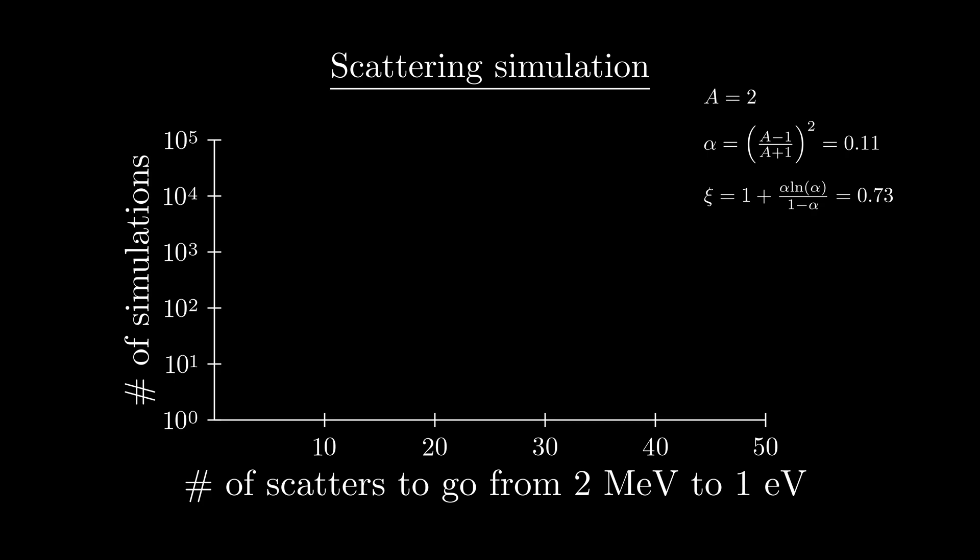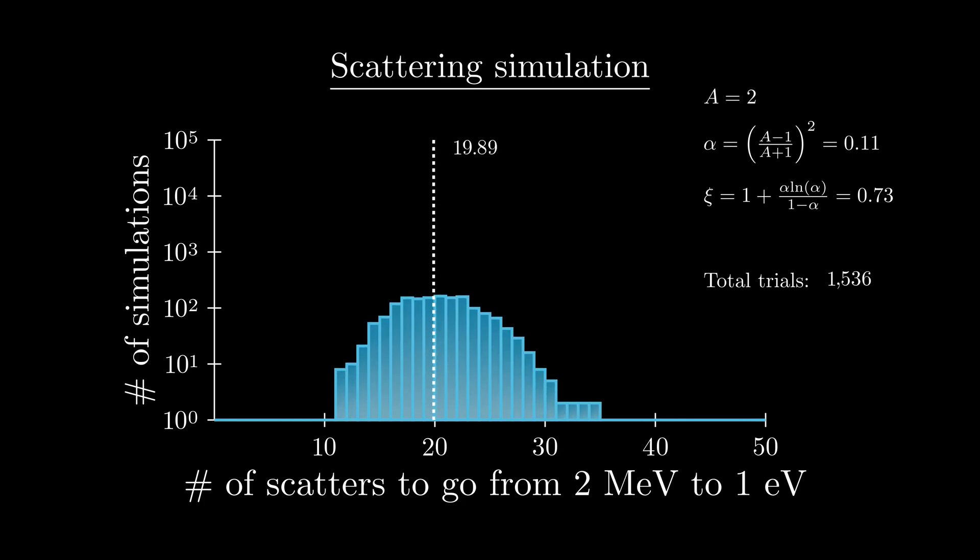After a bunch of simulations, we see that it takes on average 19.83 scatters to get from 2 MeV to 1 eV. This lines up with our prediction of about 20.